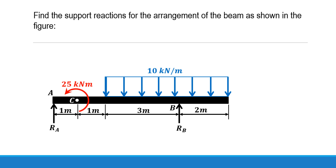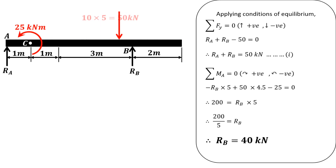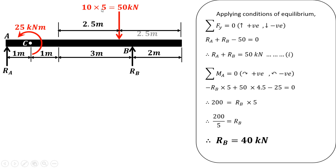We will convert this uniformly distributed load into a point load. So 10 into 5 is 50 kN, and it will be acting at the center of this 5-meter length. This 3 plus 2, that is 5, divided by 2 gives 2.5 meters. So we have converted the uniformly distributed load into a point load acting at the center.